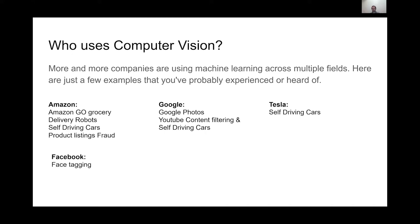Amazon Go is a convenience store using an array of cameras and processing units with computer vision — you walk in, scan your phone, pick up what you want, and walk out. It feels like you're stealing because you don't wait in line. Amazon is also experimenting with delivery robots and self-driving cars. Google Photos lets you search for terms and find all the dogs in your photo roll. YouTube uses it for content filtering, Tesla for self-driving cars, and Facebook for face tagging.